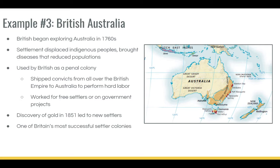That is where we see especially Europeans moving to Australia, and where the modern Australia we think of really developed. There was a policy called the White Australia Policy that restricted any non-white European immigration to Australia at a certain point. It was one of Britain's most successful settler colonies, but like India and South Africa, we also see brutal treatment of natives in the region in favor of white European settlers.